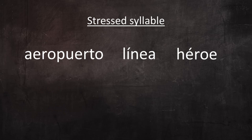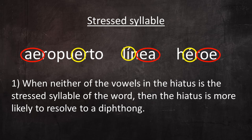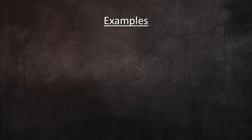One thing you may have noticed is that in these examples, neither of the vowels belonging to a hiatus is the stressed syllable of the word. Here is the hiatus, and here is the stressed syllable. This is actually one of the internal phonological factors that influences whether a hiatus resolves to a diphthong. When neither of the vowels in the hiatus is the stressed syllable of the word, the hiatus is more likely to resolve to a diphthong.